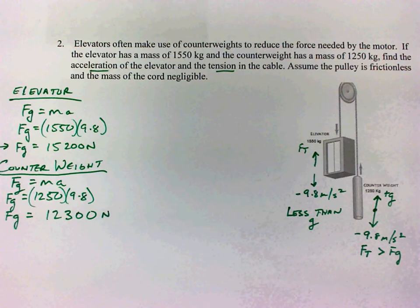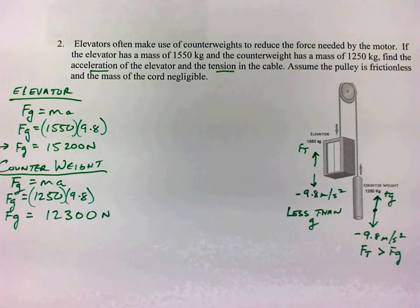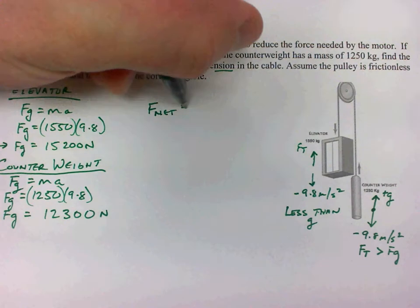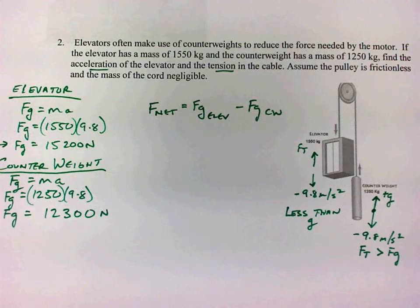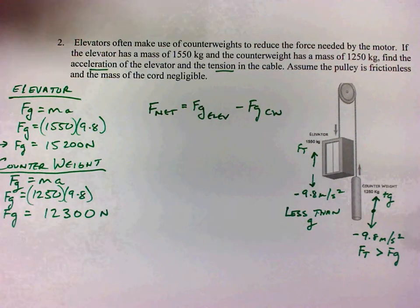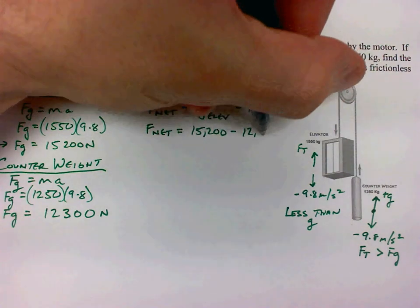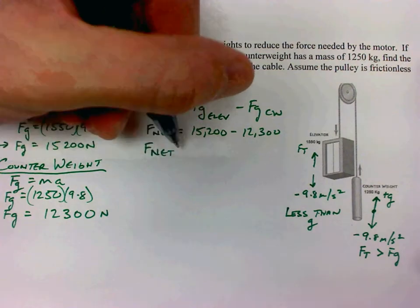Both of those allow us to solve for the acceleration of the system. The elevator force is larger, so the elevator will move downwards and the counterweight moves upwards, but much of the elevator's FG is canceled by the counterweight's FG. So we solve net force: F_net equals FG of the elevator minus FG of the counterweight — 15,200 minus 12,300 — giving us a net force of 2900 Newtons.